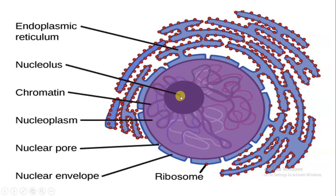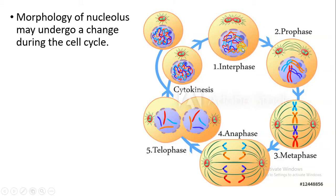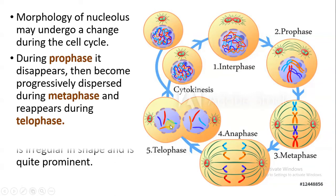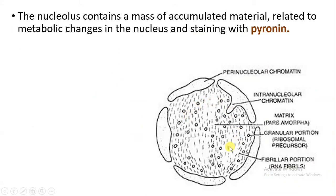Here you can see the dense structure — this is the region where the nucleolus is present inside the nucleus. When we talk about the morphology, the nucleolus may change during the cell cycle. When the cell enters a cell cycle, there is going to be a change in the nucleolus: during prophase it disappears, during metaphase it becomes dispersed, and during telophase it again reappears. In interphase, the dense nucleolus structure is quite visible and prominent. The nucleolus is a mass of accumulated material involved in metabolic changes in the nucleus and can be stained by using pyronin stain.